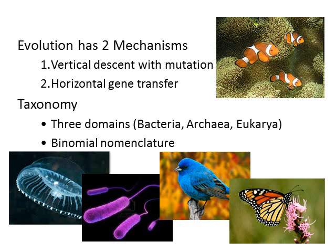For part two of chapter one, the main ideas are: we looked at evolution and the unity of life, which happens through two mechanisms — vertical descent with mutation and horizontal gene transfer. We also looked at the diversity of life and how organisms are classified based on evolutionary relationships into three domains — Bacteria, Archaea, Eukarya — and we looked at binomial nomenclature and scientific naming. This is part two of three of chapter one.